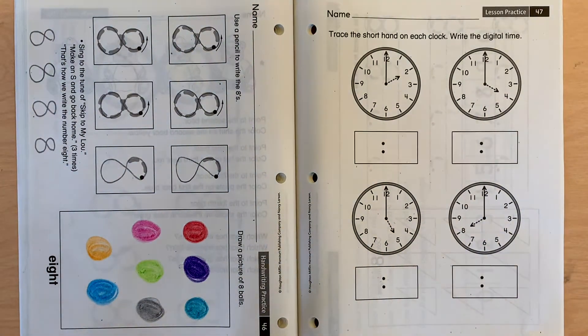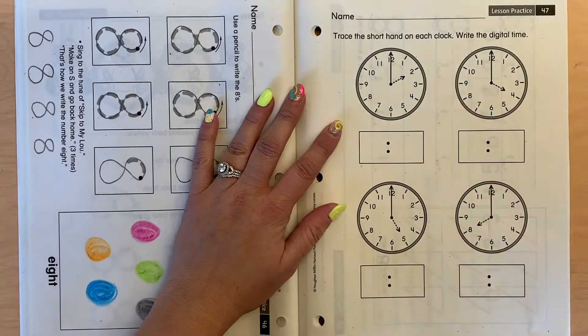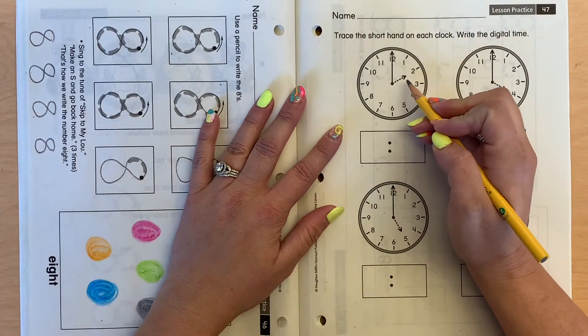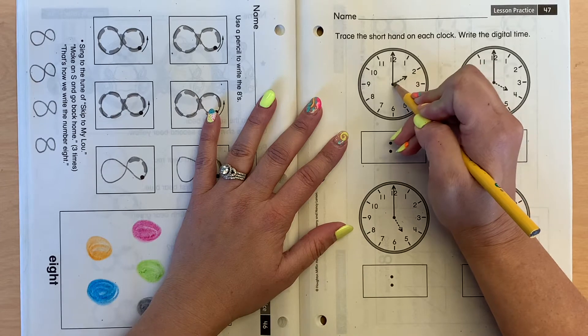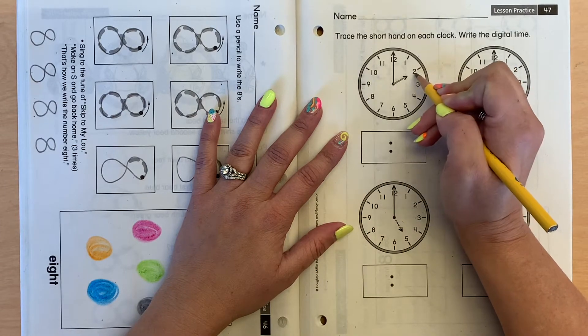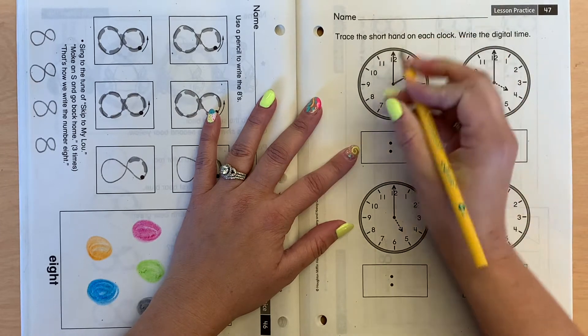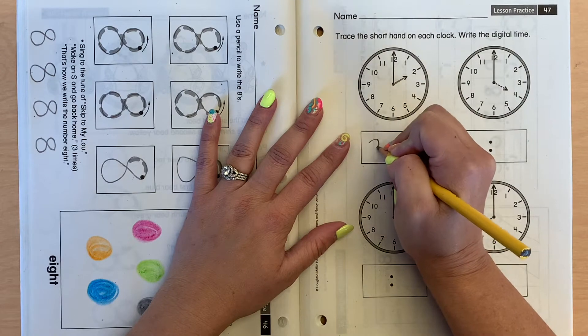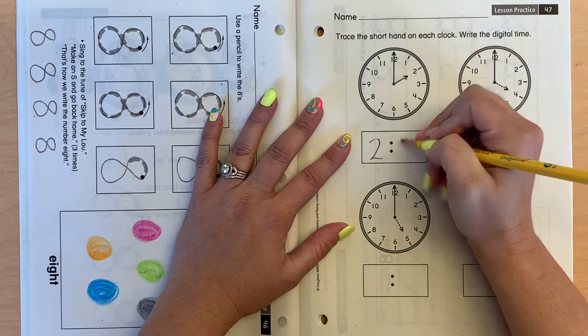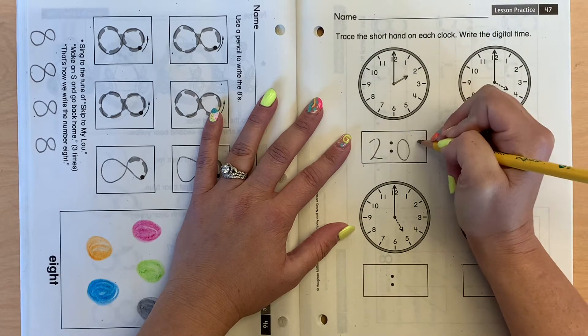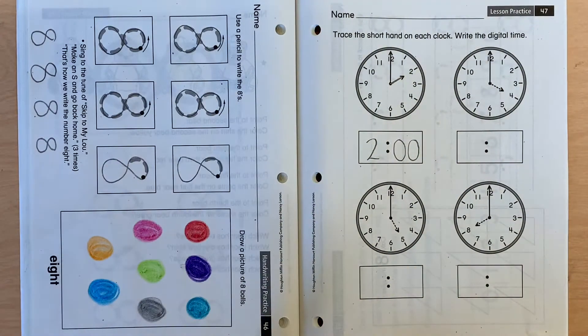Get your pencil ready. And we are going to trace the shorthand, which is the hour hand, on each clock. This one's pointing at the 2, so this is telling me that it's 2 o'clock. So I'm going to show my 2, and then I've got my 2 dots are already there, and then I'm going to put 0, 0 to show o'clock.